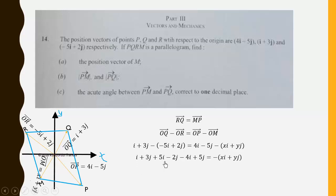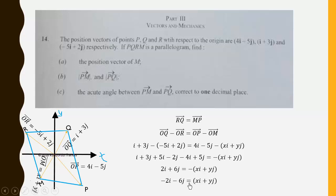Simplifying the vectors, we obtain xi + yj = −2i − 6j, which implies x = −2 and y = −6. Therefore the position vector OM is −2i − 6j.